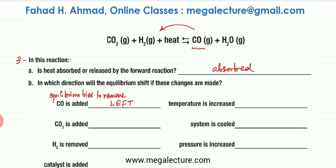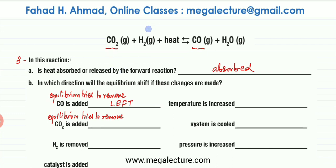The next part: CO2 is being added. Again, Le Chatelier's principle says it's going to do the opposite — it will try to remove CO2. So the forward reaction would be favored because CO2 would be converted into products. The equilibrium shifts to the right — the forward direction.